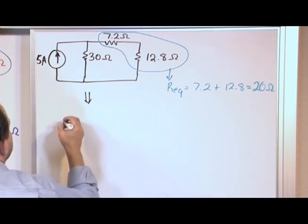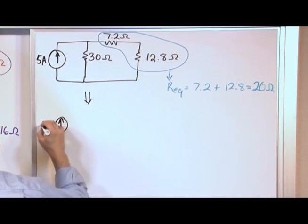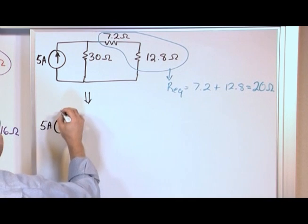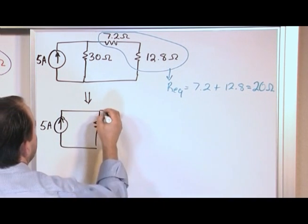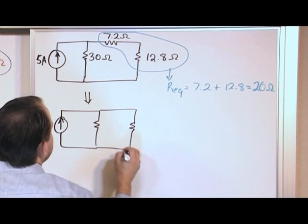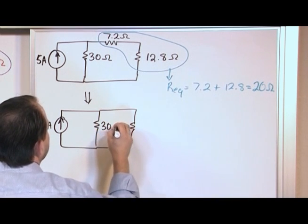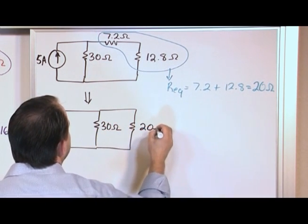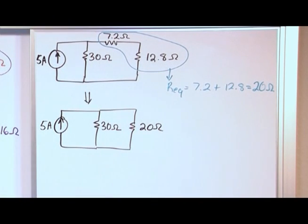All right? So, then I come down, and again, I redraw my circuit. So, this is, I know it's a lot of redrawing, but it's easier that way. You have the 30 ohm resistor, and now you have your new resistor that we've calculated. This is 30 ohms, and this is 20 ohms, because we've just summed these guys together.